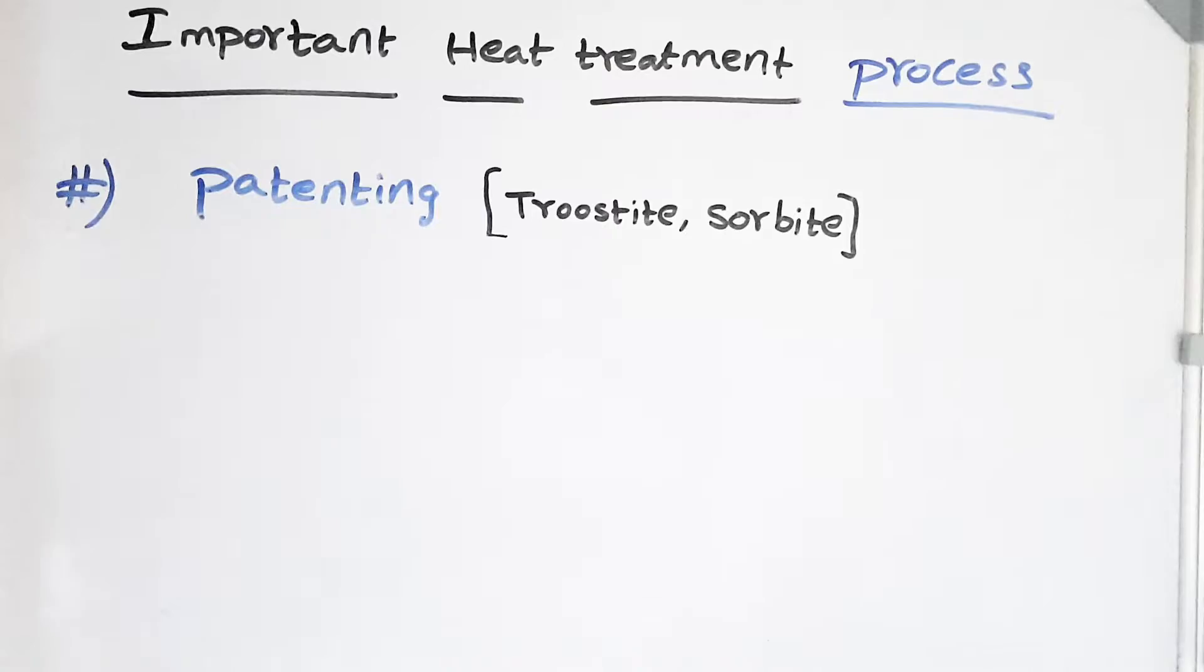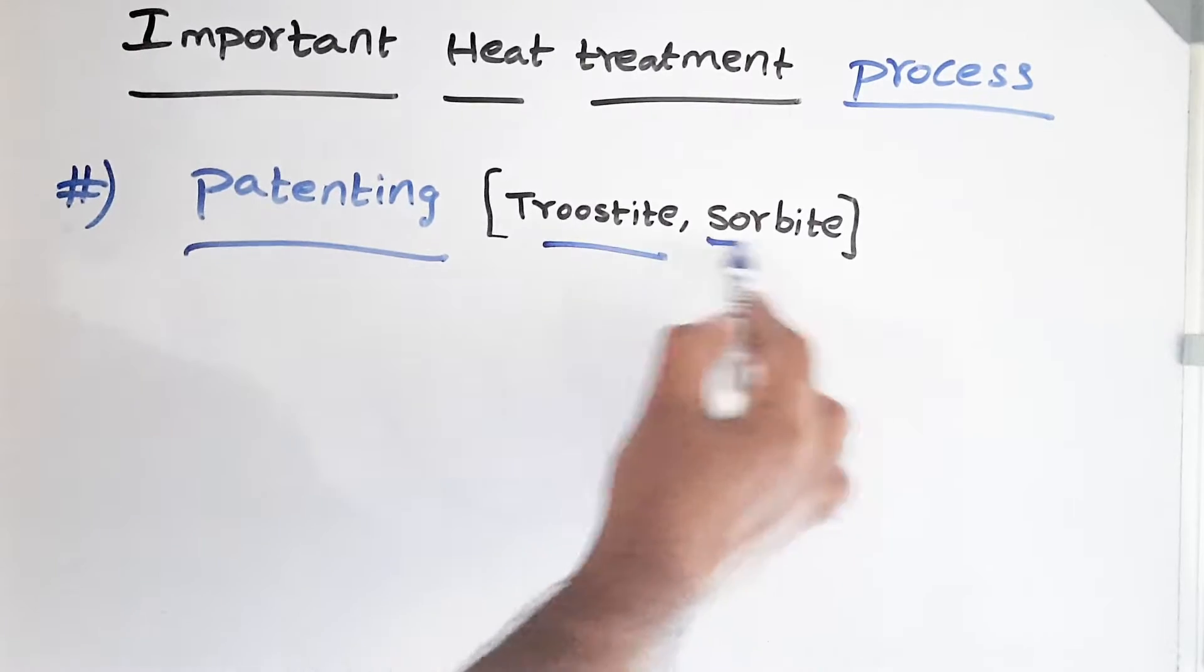Hello friends, welcome to our channel Metallurgy Crisp. We'll see what is patenting. Patenting is a heat treatment which produces troostite and sorbite.